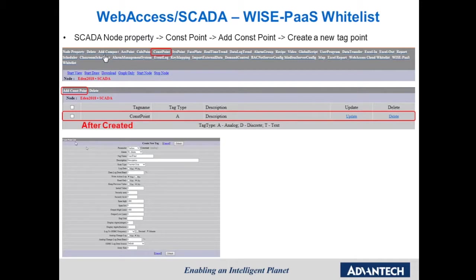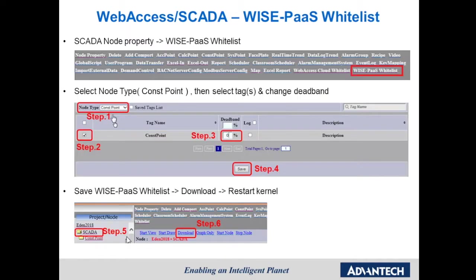Then go to the node property in the SCADA node, select Constant Point, and click Add Constant Point to create a new tag point. After we have a tag, go to node property again and select WISE-PaaS Whitelist. Select Constant Point node type, then select the tag and click it. Change the database to 0 and click Save. Then save the WISE-PaaS whitelist, download the whole project, and restart the kernel.